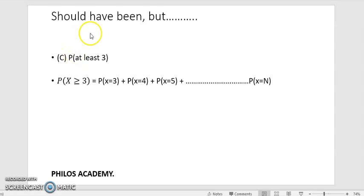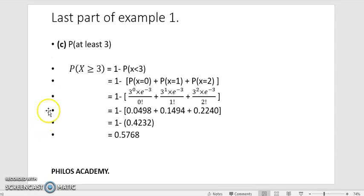Everything should have been better. Let's see the logic behind what I've written. At least 3 means from 3 going upwards. But we don't know the highest number of X. So we can't use this formula to find it. That's why we have another way of doing that. Probability of X is at least 3, which is X greater than or equal to 3. There's a short formula for doing it. You are going to say 1 minus probability of X less than 3.